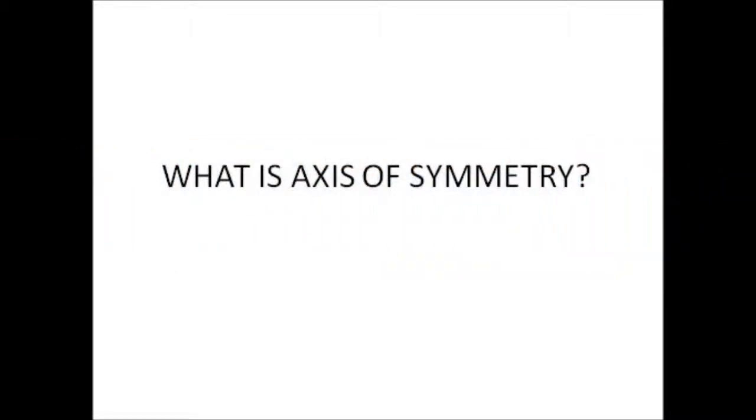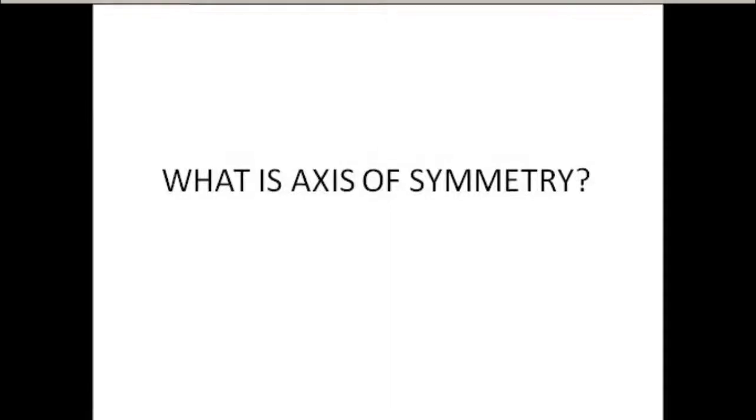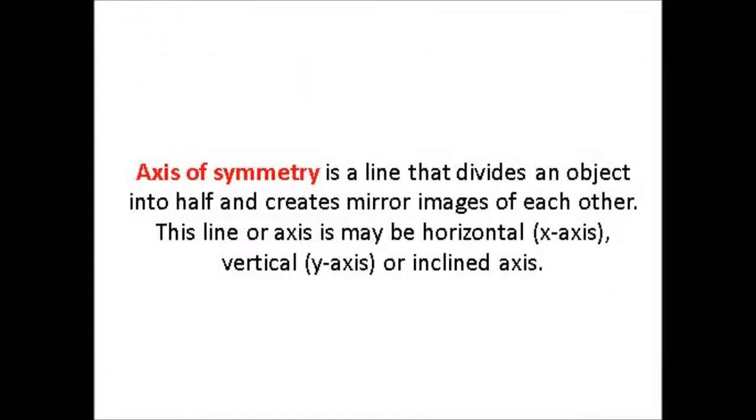In this video, it is discussed what is axis of symmetry. Axis of symmetry is a line that divides an object into half and creates a mirror image of each other. This line or axis may be horizontal, vertical, or an inclined axis.